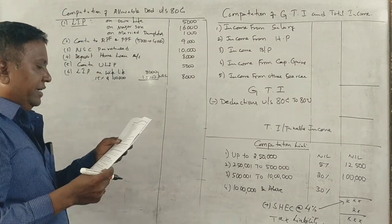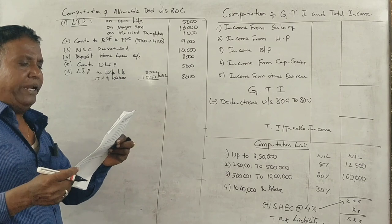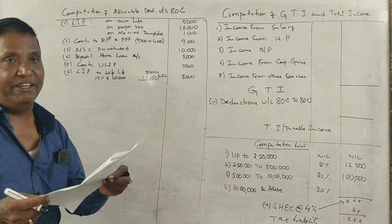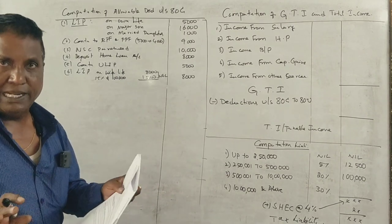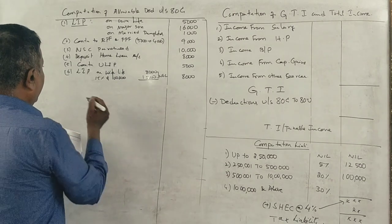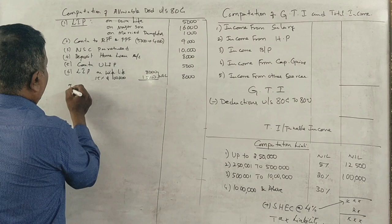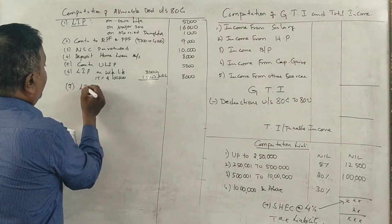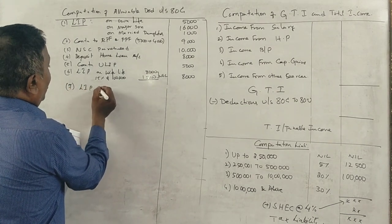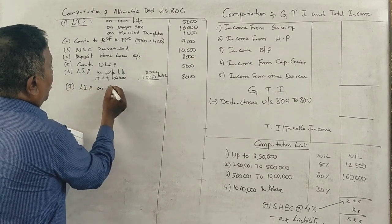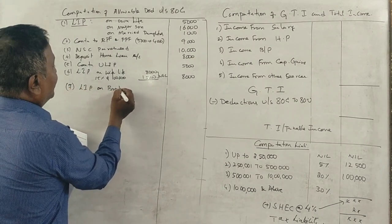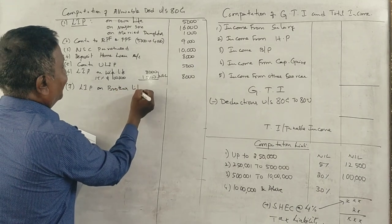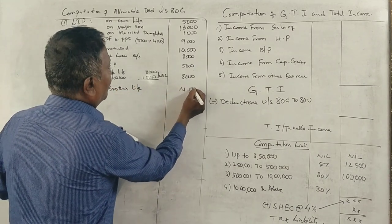Next, LIC premium paid by him on his brother's life. LIC premium on own brother's life — not eligible.